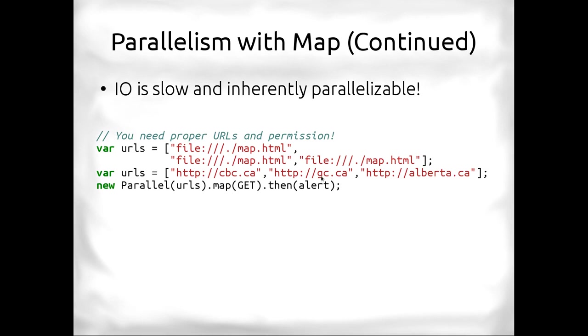It might not be immediately obvious why you'd bother to do this. For the most part, you're probably going to do it for I.O. I.O. is slow and inherently parallelizable if it's to independent devices or independent locations, addresses, machines. Imagine you had three webpages that were on three different web servers and they all took two seconds apiece to visit. Then, getting three of the webpages would take six seconds. But if you parallelized it, it would only take two seconds. Because that would be the maximum time you'd get each webpage.